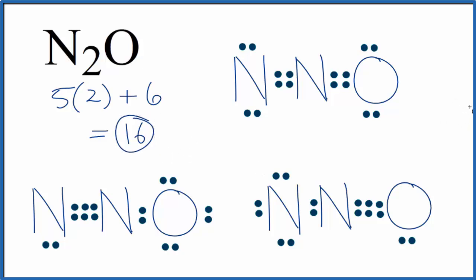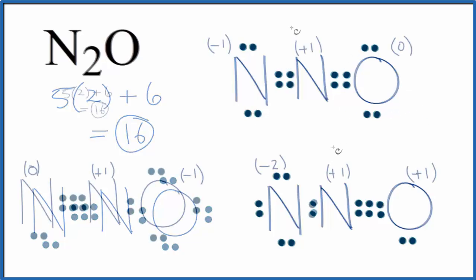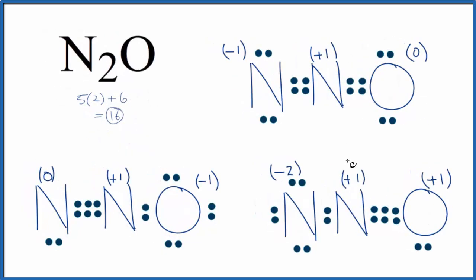So to figure this out, which one is the best Lewis structure, the most favorable Lewis structure, we'd look at formal charges. I'm going to write those in. If you need help determining formal charge, there's a link to a video on determining the formal charges for these compounds. So the formal charges are, we want our formal charges to be as close to zero as possible.